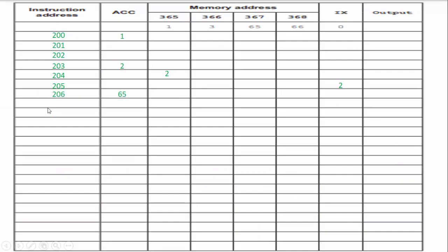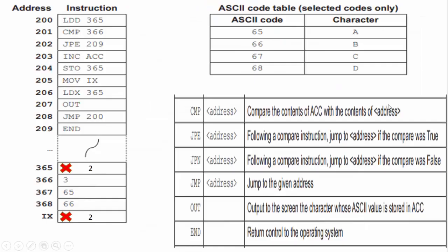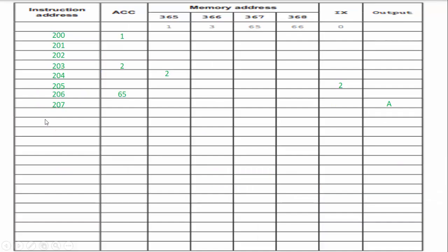Address 207 just went — I document that. Line 207 told us to output the character and we're outputting A. I look at 208, which is a jump instruction — jump to the given address. This means I'm going to jump to 200. This address did run, I need to document that on my trace table. Nothing else updates, so I start over at 200, LDD 365.